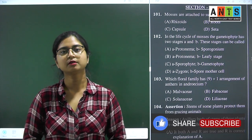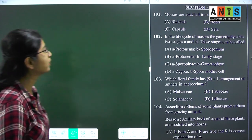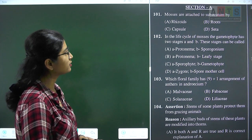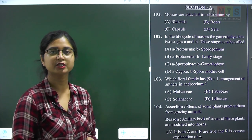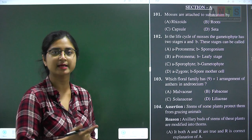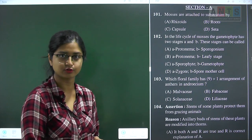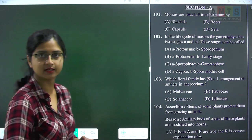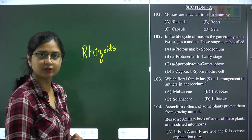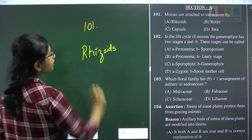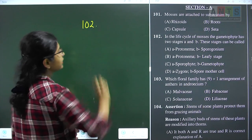Hello students and welcome to the video solutions of NEET FT2 botany section, starting with question number 101: mosses are attached to substratum by. Mosses are the higher groups of bryophytes; bryophytes do not have proper body differentiation, they do not have true roots, stems, or leaves. They have root-like, stem-like, and leaf-like structures. To attach to the substratum, they require rhizoids, which are root-like structures. So question 101 answer is option A, rhizoids.